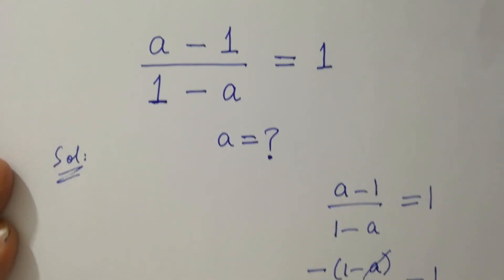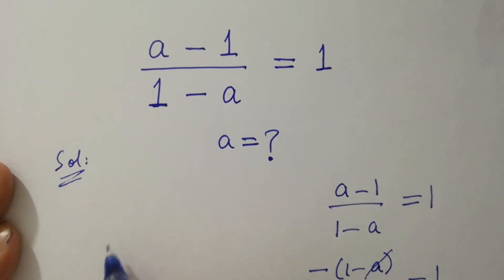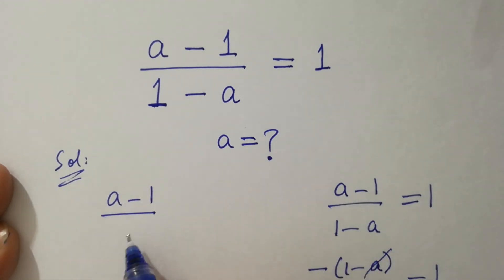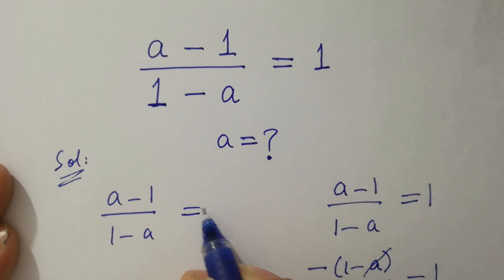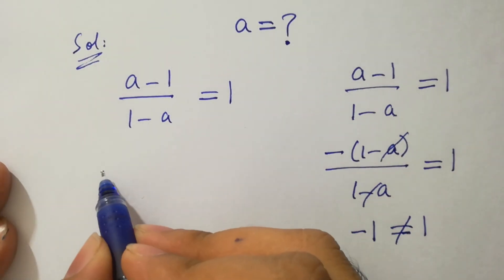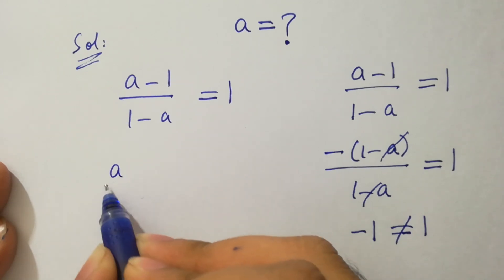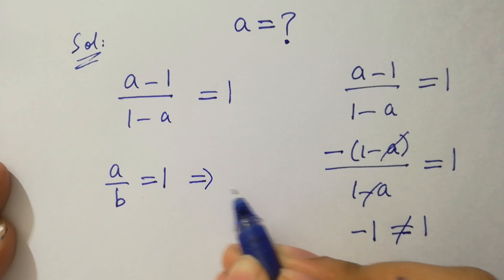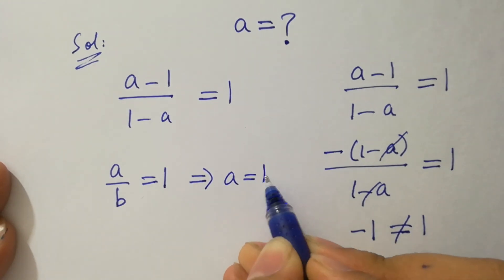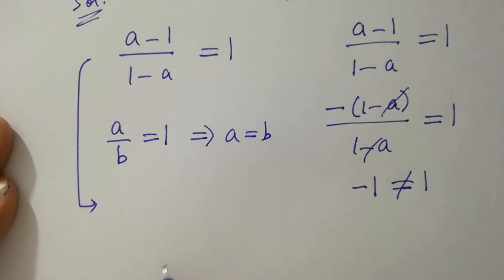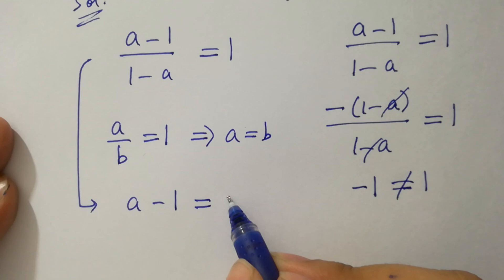We have (a minus 1) over (1 minus a) equal to 1. As we know, if a over b equals 1, then a equals b. Then it will be a minus 1 equals 1 minus a.